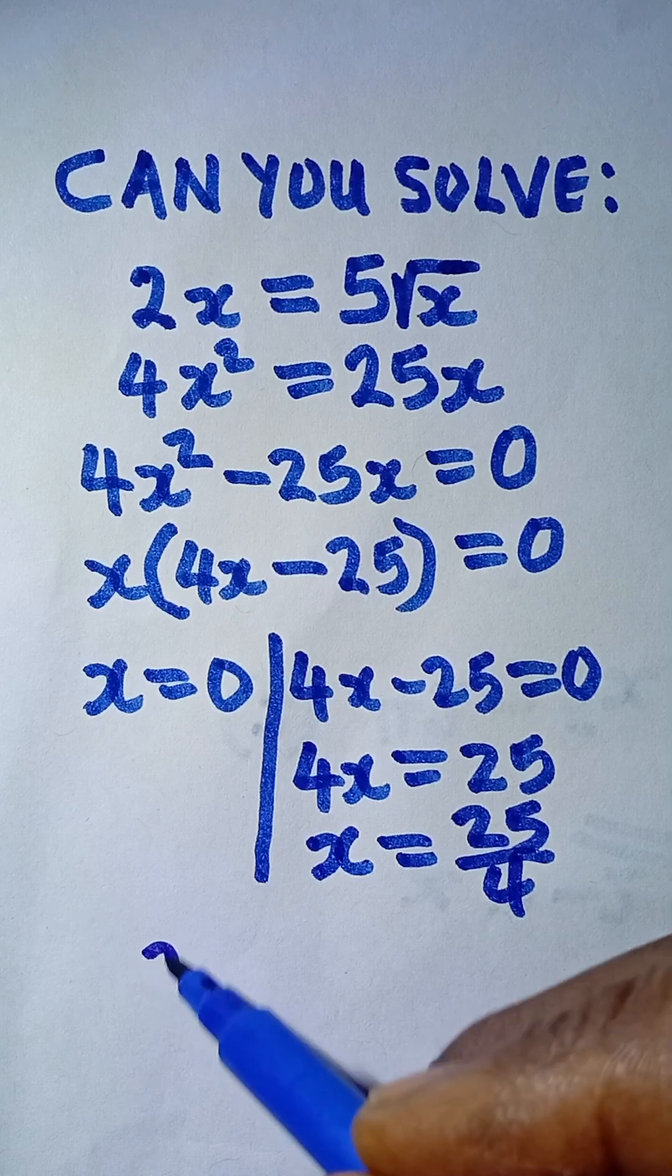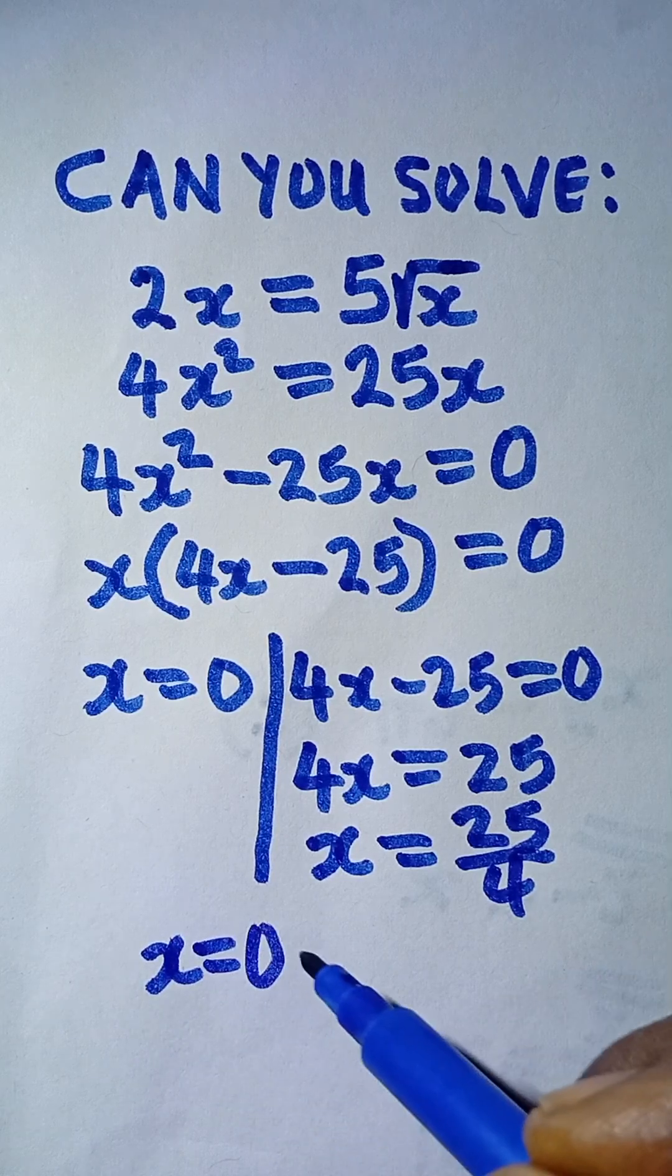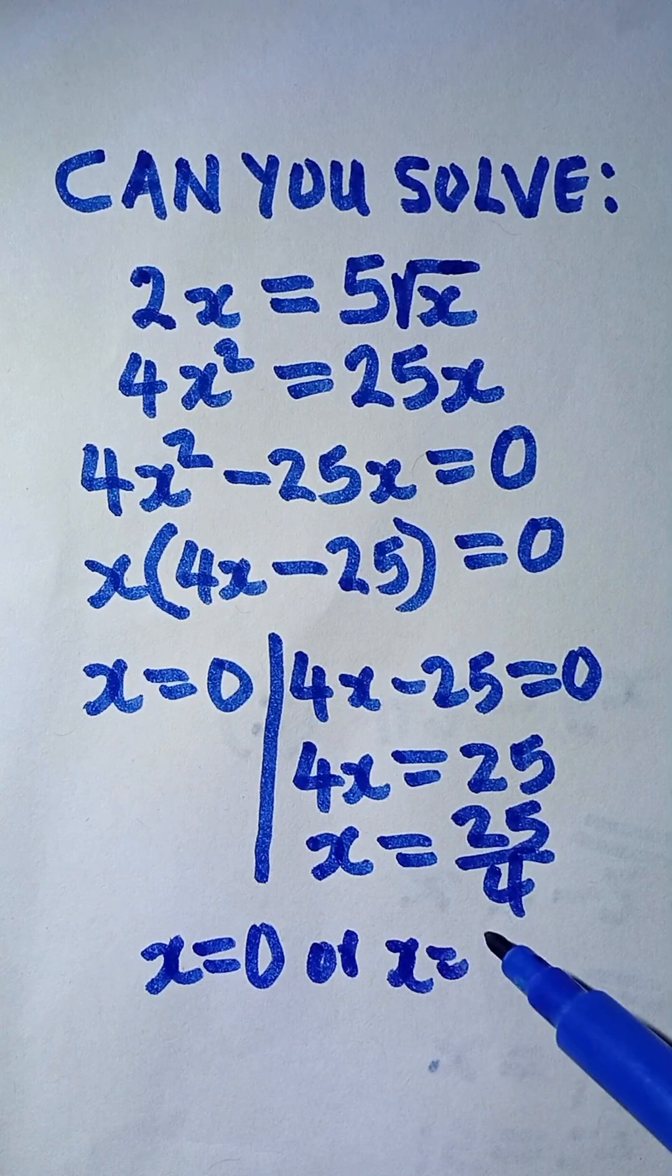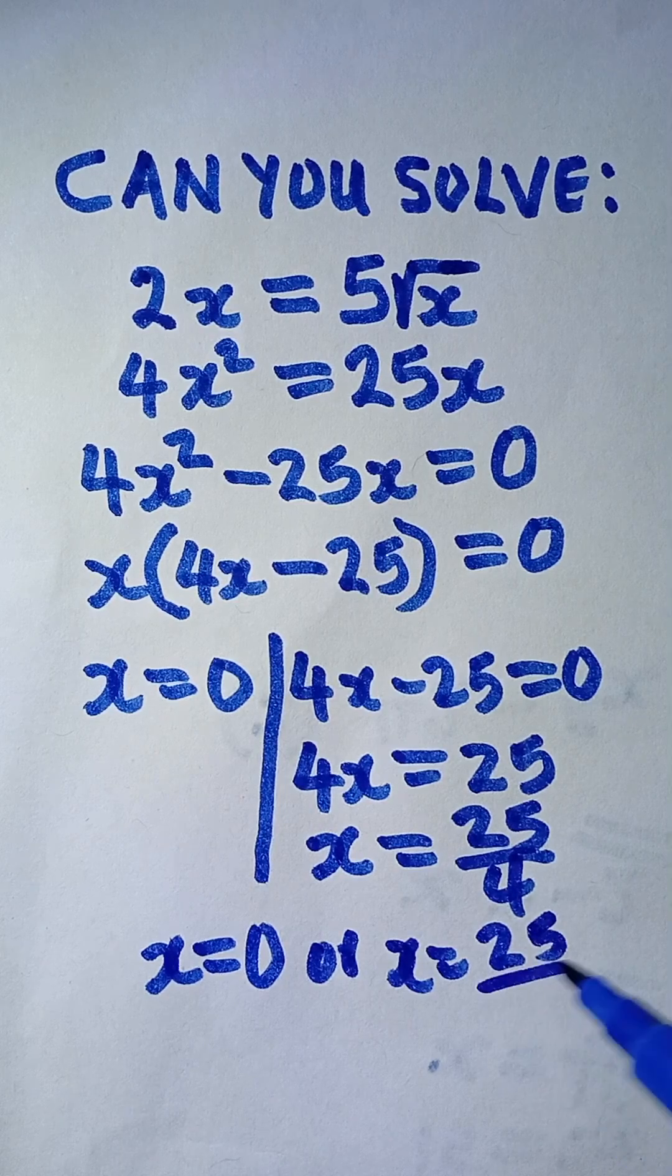So that means my final answer is x equals 0 or x equals 25 over 4.